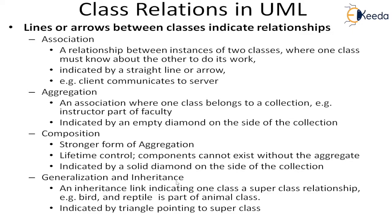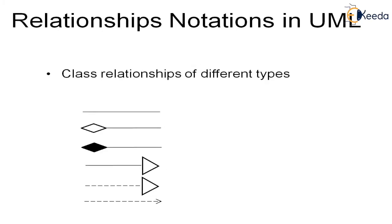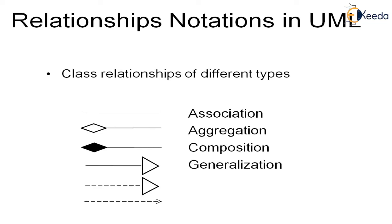Then we have generalization or inheritance. Inheritance is a link indicating a superclass to a child class. It is indicated by a triangle pointing to the superclass — the child classes are generalized to the superclass. These are the UML standard notations: association, aggregation, composition, generalization, realization, and dependency. Realization is the object in transition.